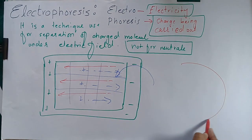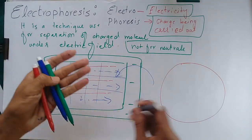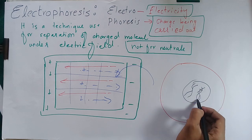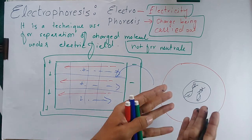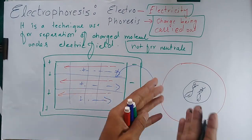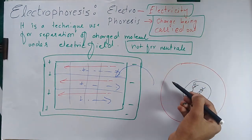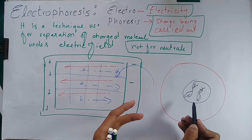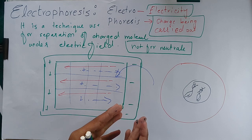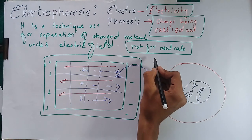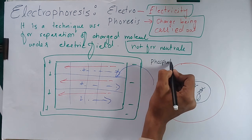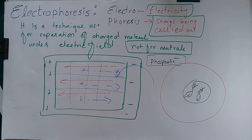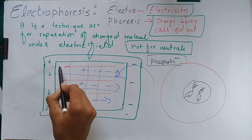Suppose we have a cell — a typical cell — and inside this cell is a DNA nucleus. When we isolate this DNA, we use electrophoresis. DNA is mostly made up of phosphate groups, and phosphate groups carry a negative charge. So DNA, being negatively charged, can be moved under the electric field using electrophoresis.